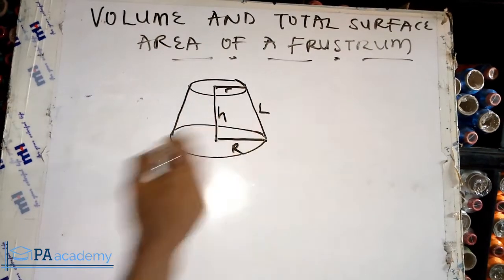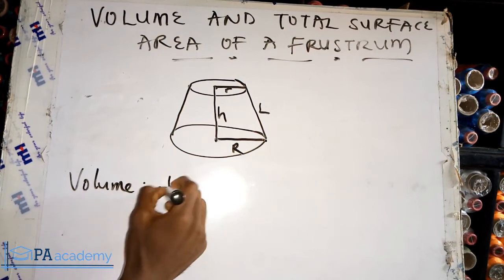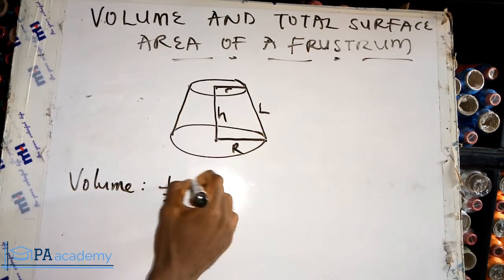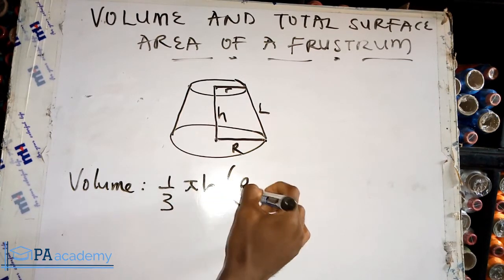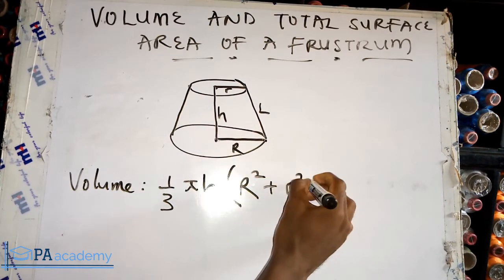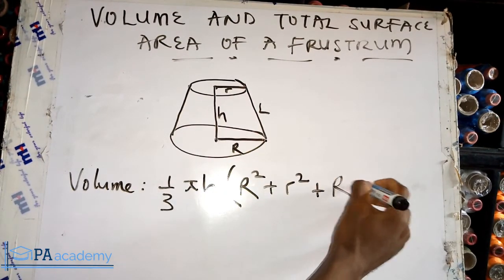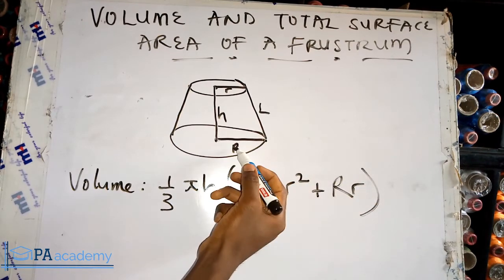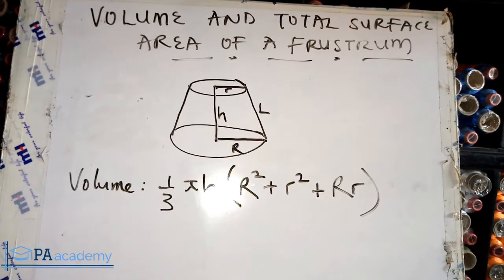The formula to calculate the volume of a frustum is: one-third multiplied by pi times the height, into brackets, the major radius R squared plus the smaller radius r squared, plus R times r — that is the multiplication of the bigger radius and the minor radius. So this is the formula to calculate the volume of a frustum.